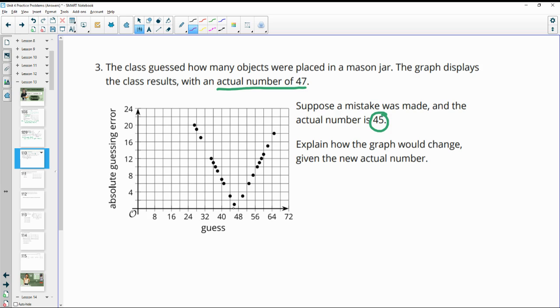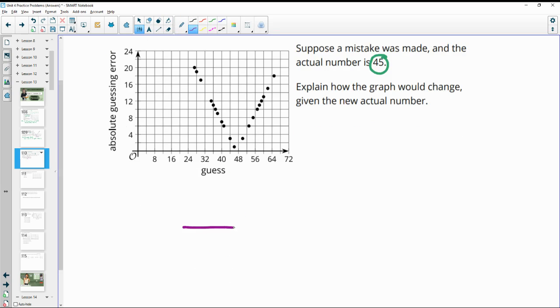And so these two points right now would be connecting at 47 because if somebody guessed 47, they had 0 error. So now that's going to happen at 45. So if we think of 47 being right here, 45 is going to be to the left of 47. And so the graph is going to move to the left two units.